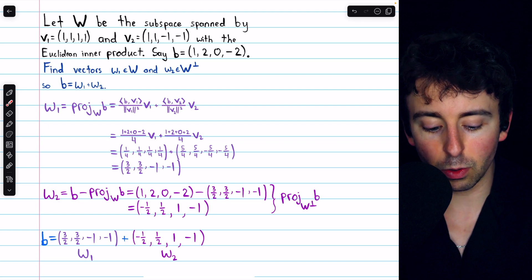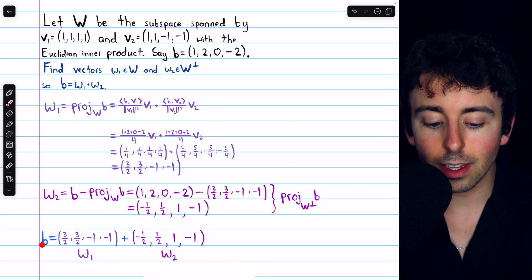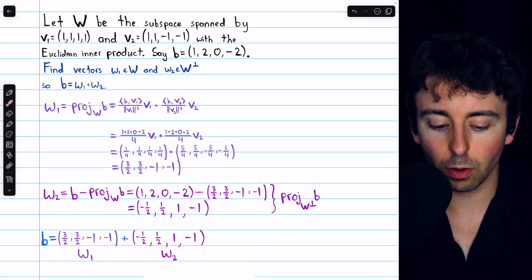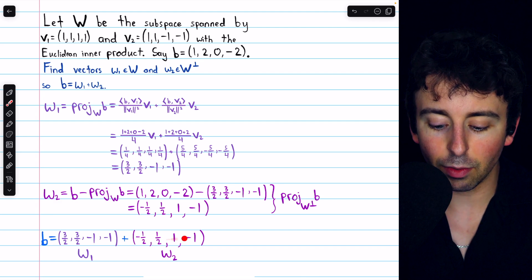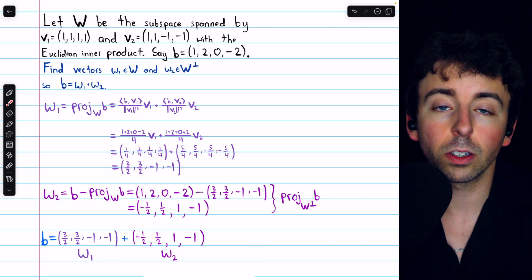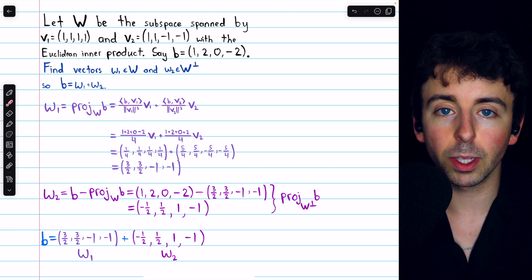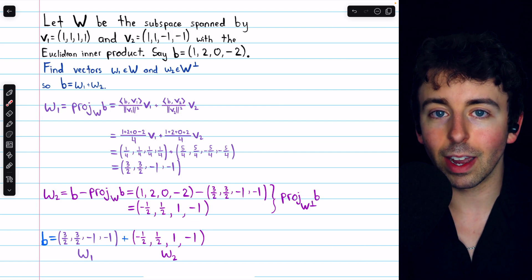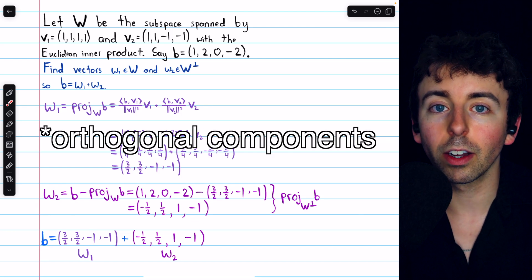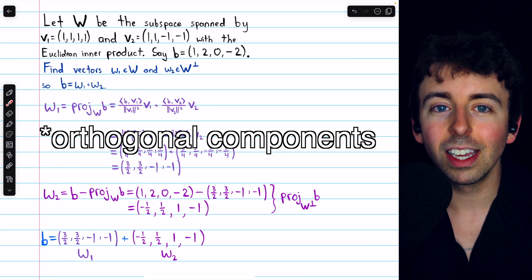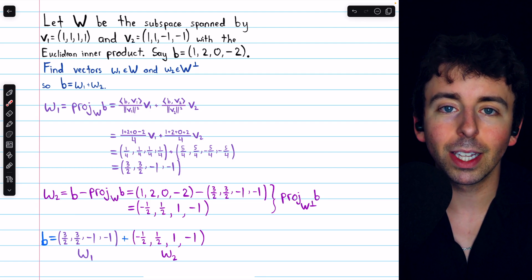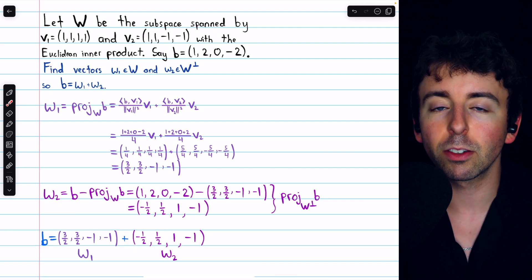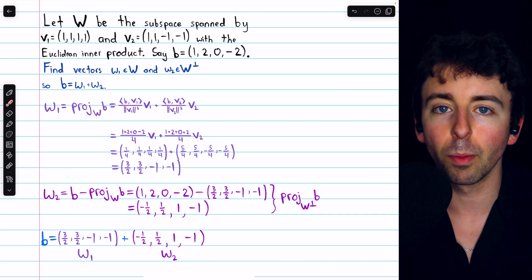Finally, we have our solution. B is equal to this vector that's in W plus this vector that's in the orthogonal complement of W. And that's how to decompose a vector in R4 into orthogonal components. Let me know in the comments if you have any questions, and be sure to check out my linear algebra course and linear algebra exercises playlist in the description for more. Thanks for watching.